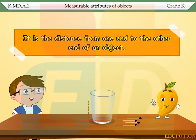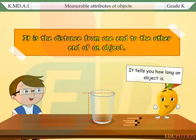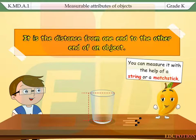It is the distance from one end to the other end of an object. It tells you how long an object is. You can measure it with the help of a string or a matchstick.